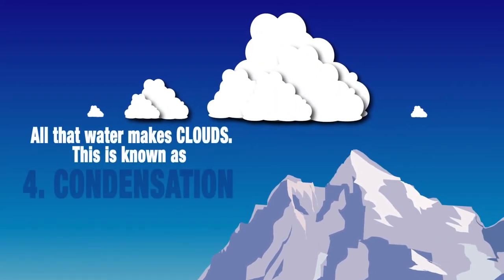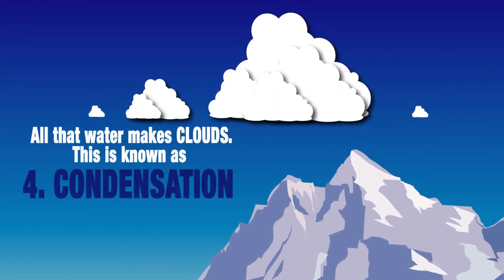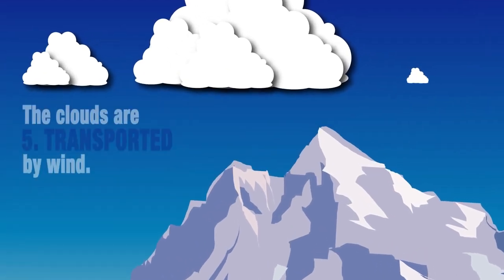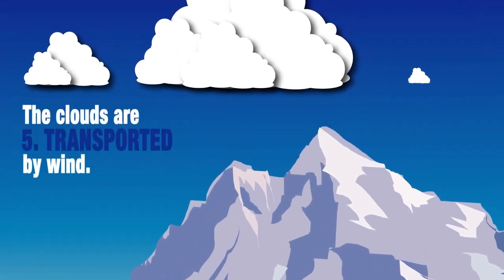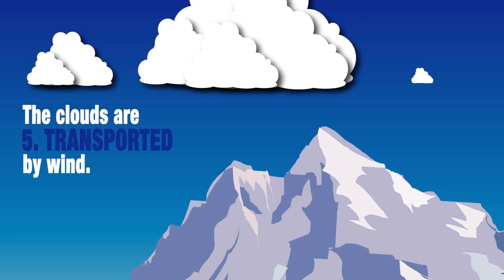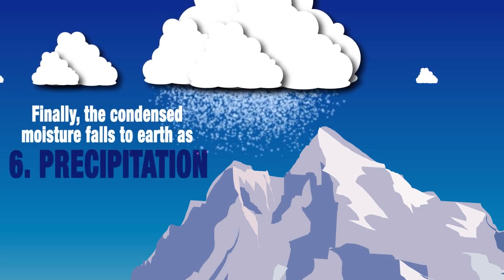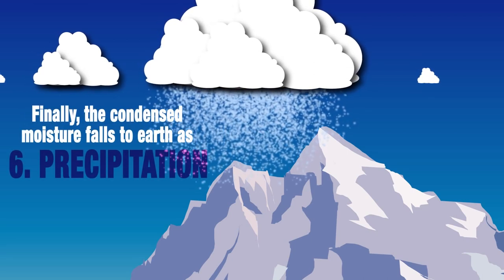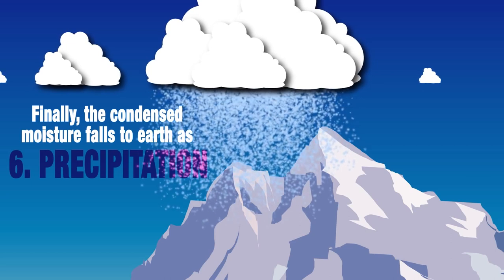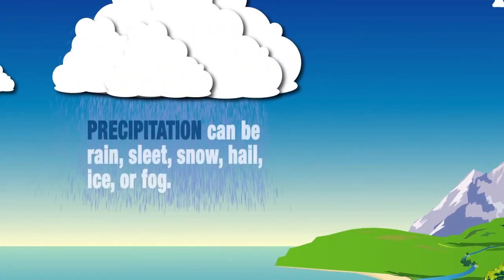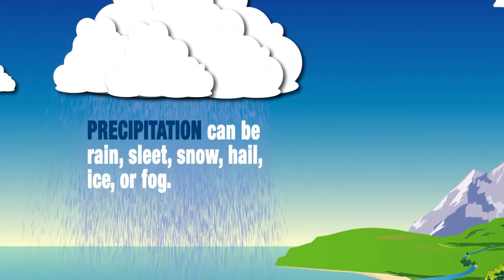Condensation, or liquefaction, is the process of water vapor turning back into liquid water. Transportation is when the clouds are transported by winds. Precipitation is when water falls from the sky in numerous different forms: rain, snow, and hail.